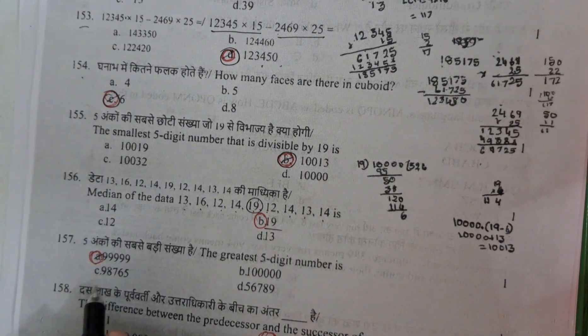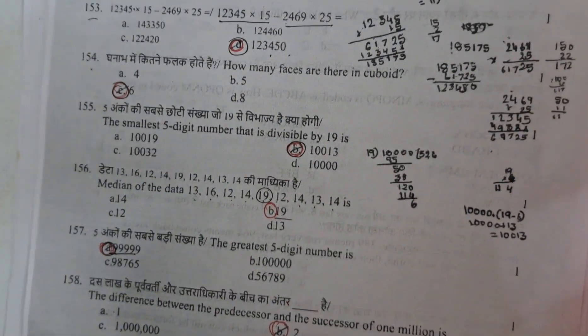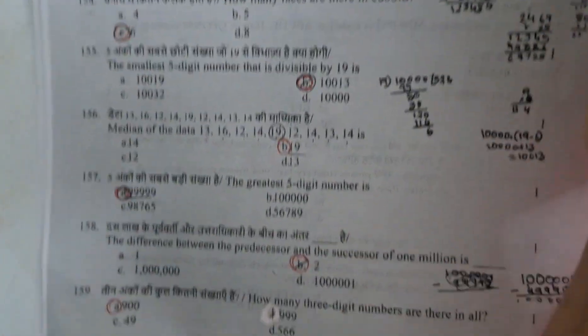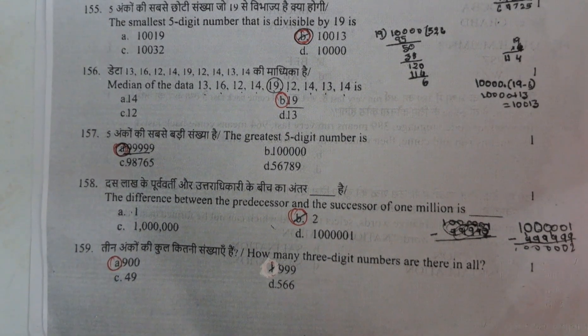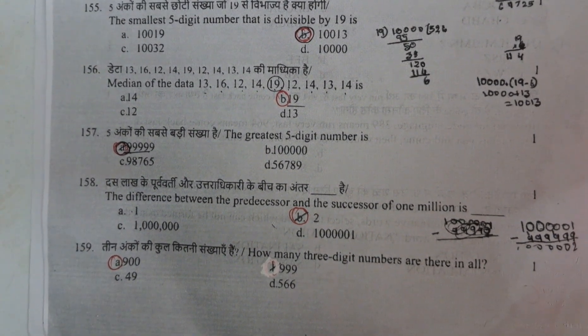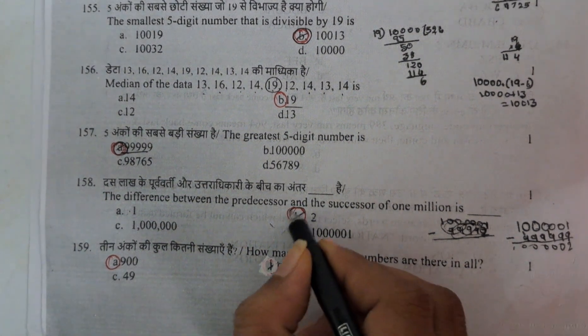And the greatest 5 digit number, 99999. That is the answer A. And 158 here. The difference between the predecessor and successor of the million. Here not only difference between predecessor and successor of million.